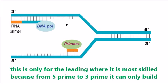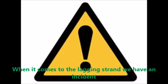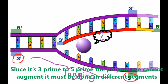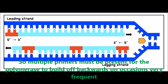This is only for the leading strand where it is most skilled, because five prime to three prime it can only build. When it comes to the lagging strand we have an incident - since three prime to five prime, the polymerase cannot augment. It must be done in different segments, so multiple primers must be present for the polymerase to build backwards on occasions very frequent. We call these parts the Okazaki fragments.